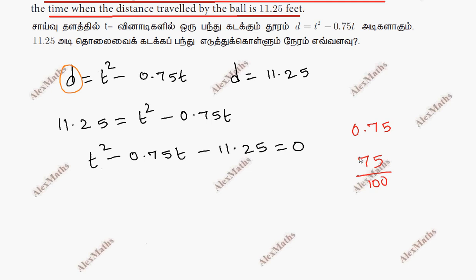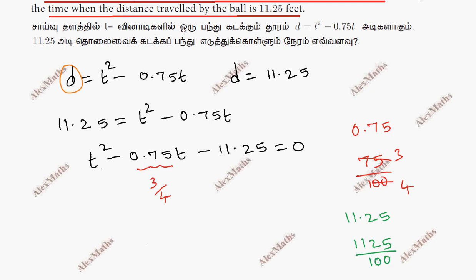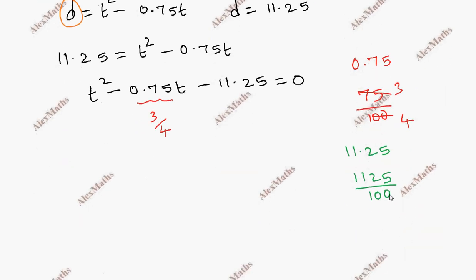Now we convert the decimal values to fractions. 0.75 is equal to 75 by 100, which simplifies to 3 by 4. And the value of 11.25 is 1125 divided by 100, which is 45 by 4.